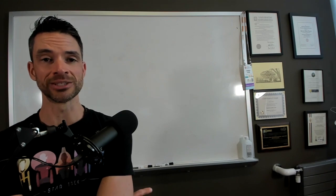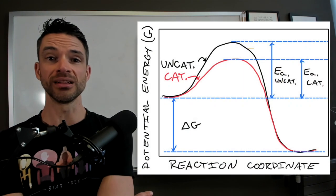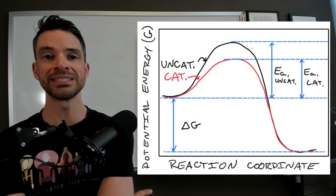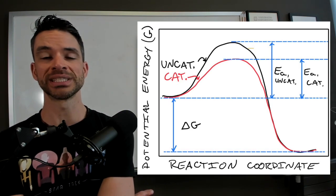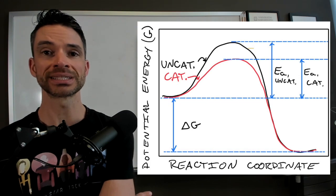So the activation energy is that hill of potential energy that needs to be reached in order for a reaction to proceed downhill into products.